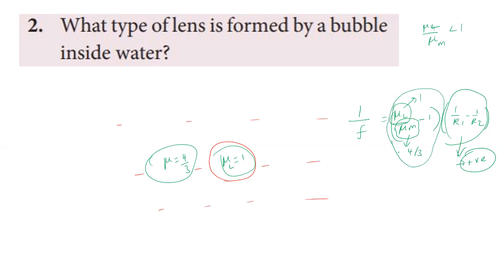Since mu_lens by mu_medium is less than 1, the term mu_lens by mu_medium minus 1 is negative. This makes the focal length negative. When the refractive index of the lens is less than the medium in which it is placed, a convex lens acts as a diverging lens and a concave lens acts as a converging lens. So the air bubble, which is convex in shape, acts as a diverging lens.